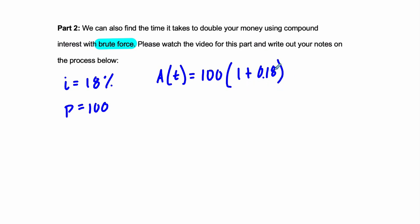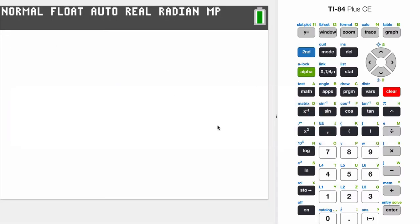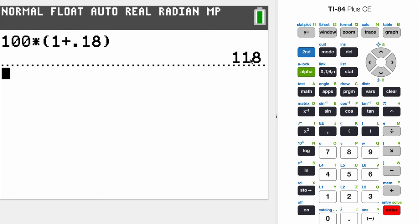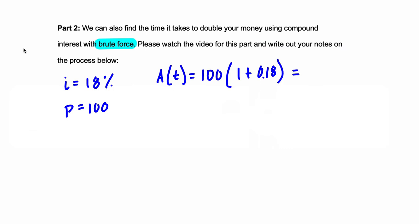So at the end of the first year, this is the amount of money you're going to have. Let's figure that out. It's going to be 100 times 1 plus 0.18. And that's happening once in a year. So you have $118. That makes sense. You're adding 18% to 100. So that's $118. Now, we're not doubled yet. We're only at $118 and we want to keep going. So that's after the first year.